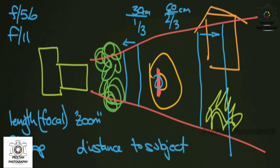Distance to the subject is really important. The closer the subject moves to you, the shallower the depth of field — as you move closer, the depth of field pancakes down. As the subject moves further away it naturally deepens. f5.6 looks totally different when your subject is three meters away compared to 30 centimeters away — at 30 centimeters you'll have a razor-thin field of focus, and further away more and more will be in focus.